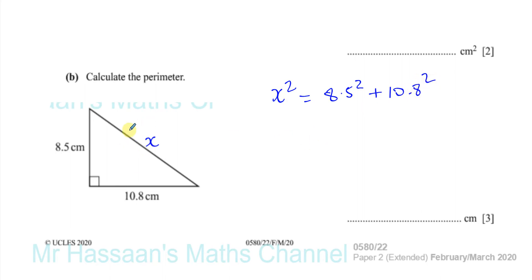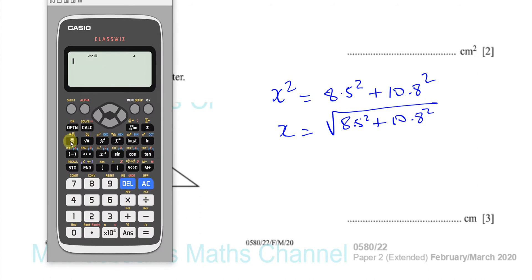Okay, so the square of the hypotenuse is the sum of the squares of the two shorter sides. So X is the square root of 8.5 squared plus 10.8 squared. So let's stick that in the calculator. We're going to have the square root of 8.5 squared plus 10.8 squared, all under the square root sign. That gives us 13.743.